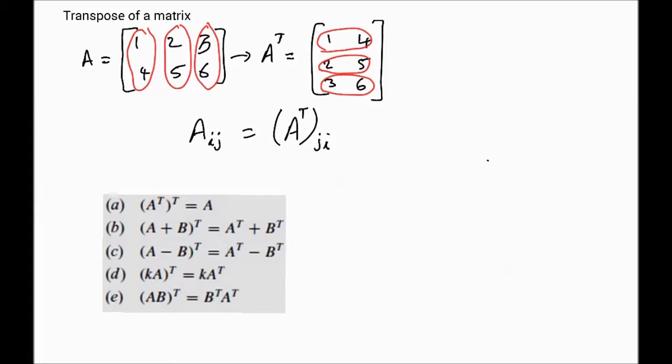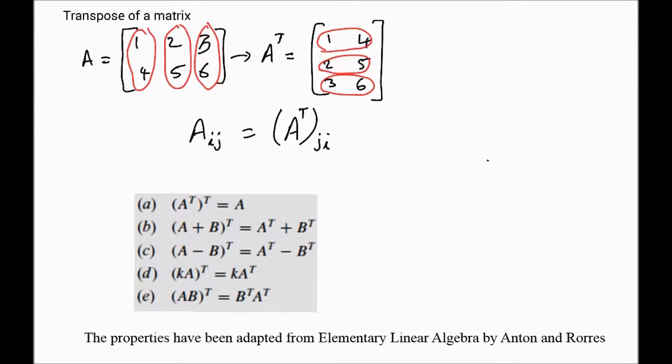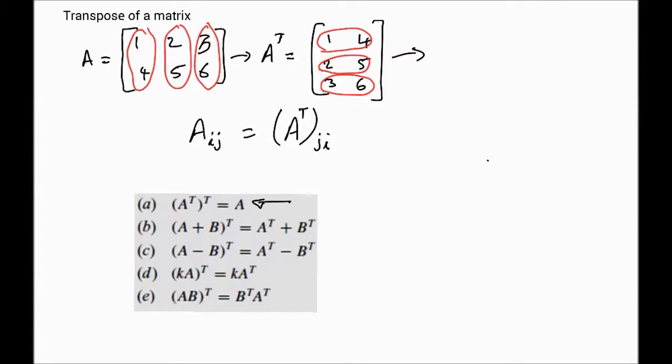For any A and B of appropriate size, here are some properties of the transpose. The first one is a very straightforward one. It states that the transpose of the transpose gives you the matrix back. So if I take the transpose of this matrix,